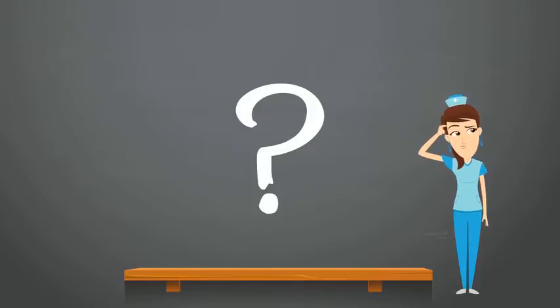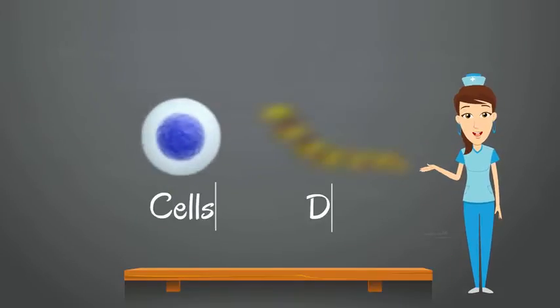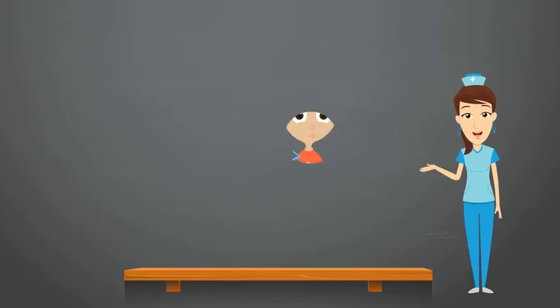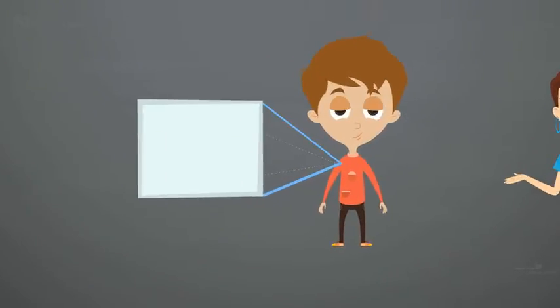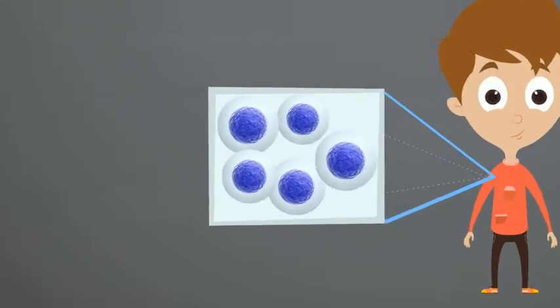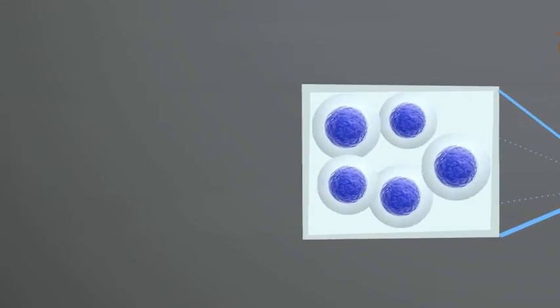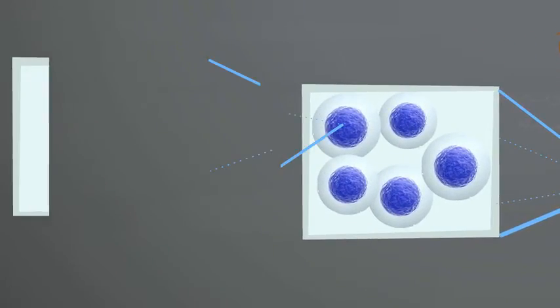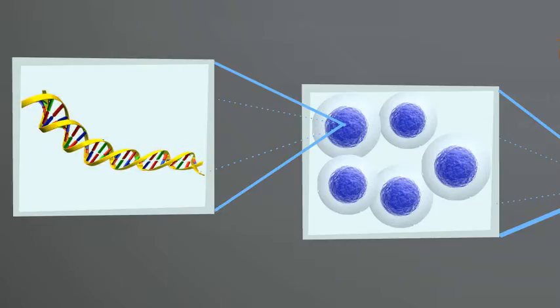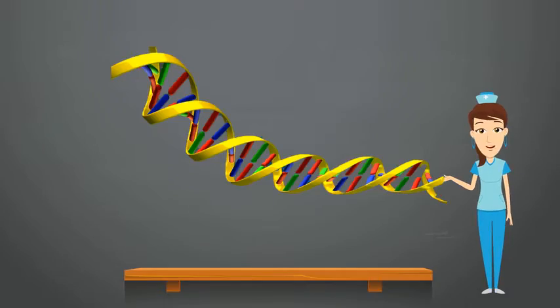To explain how muscles grow, I need to first tell you about cells and DNA. Our bodies are made of tiny structures called cells. Even our muscles are made up of these cells. Inside each cell is something called DNA. DNA is important for telling the cells what is the right thing to do.